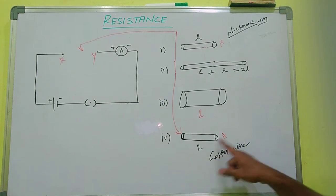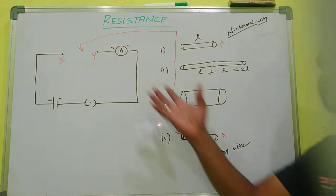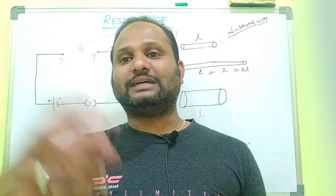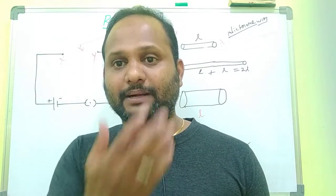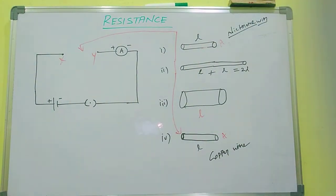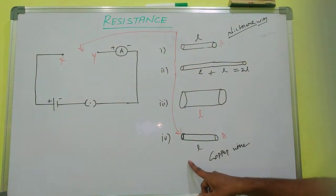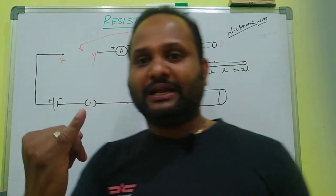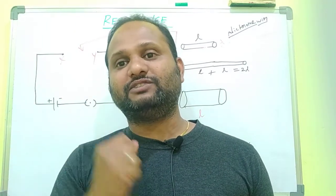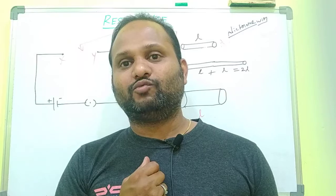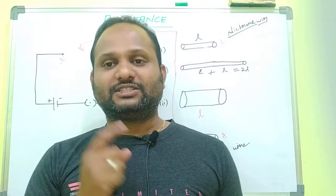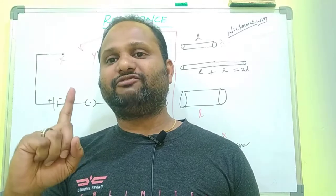When we change only the material of the wire while keeping the length and area of cross-section the same, the ammeter shows a different reading compared to the first case. Why? Because the nature of the material is different. We will now study the property of resistance and what factors are influencing it.